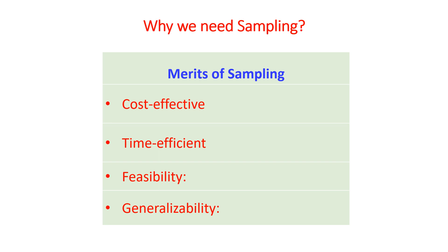So let's proceed to why we need sampling. There are many advantages to taking a sample from the population. The first one is cost effectiveness: because of the smaller size of the sample compared to the population, it takes less cost to collect, analyze, and process data. Similarly, it is time efficient — because the sample is smaller in size than the population, it takes less time than conducting a census.